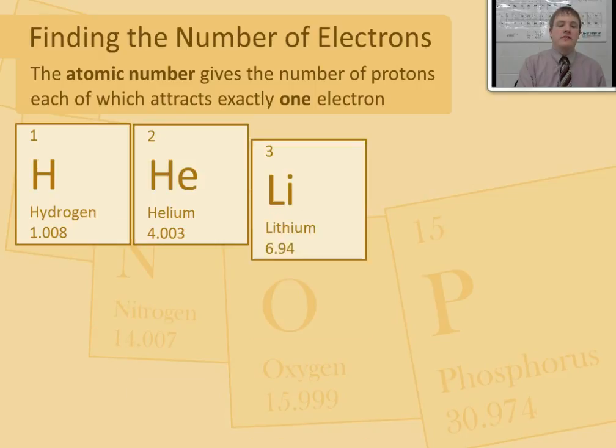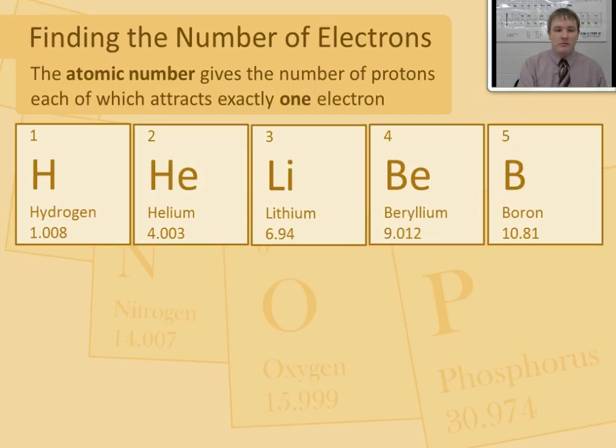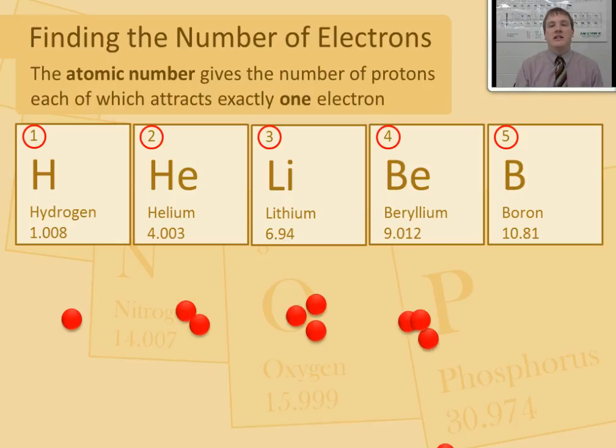Let's bring back our first five element squares on the periodic table. I'm going to circle the atomic number once again, and I'll show you the number of protons in each of those elements. Remember, that's what the atomic number gives you: the number of protons.